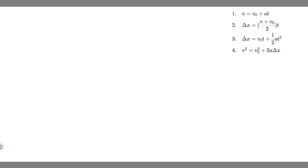Before we do these problems, I always like to draw what's going on. So we know this ball is going to be thrown up. It's going to be thrown upwards with a speed of 25 meters per second. It's going to go upwards, then it's going to hit some point, and it's going to fall straight back down.